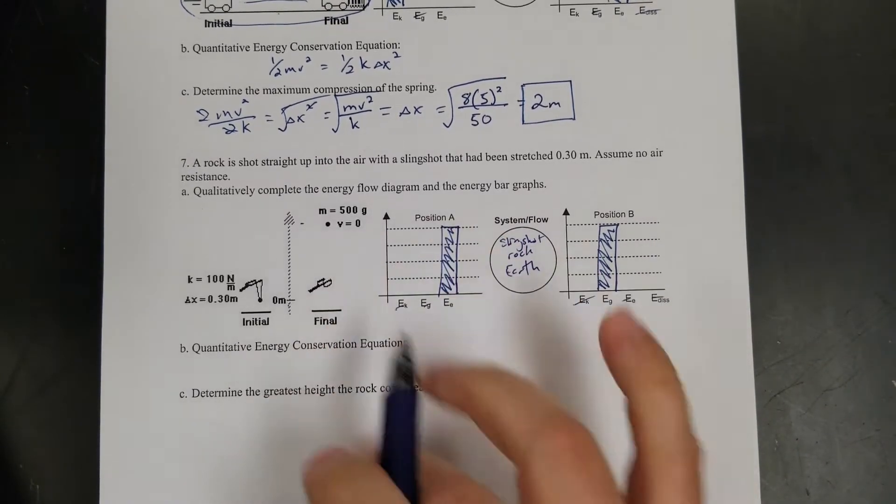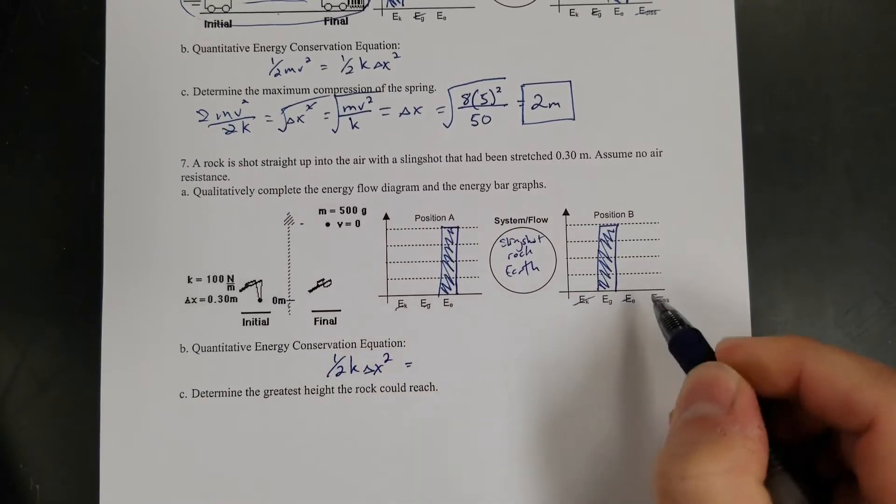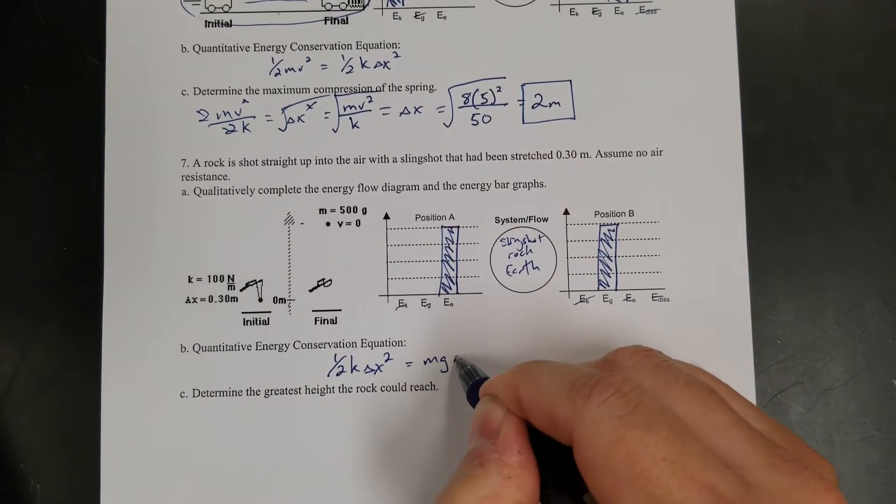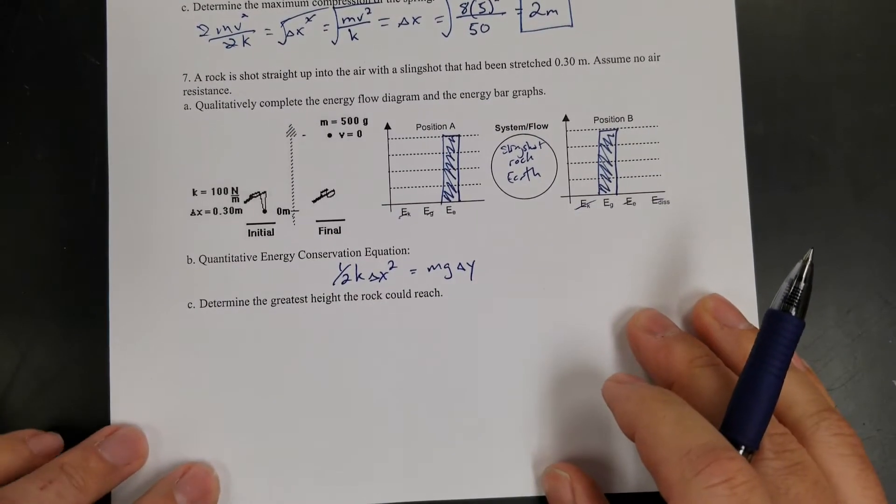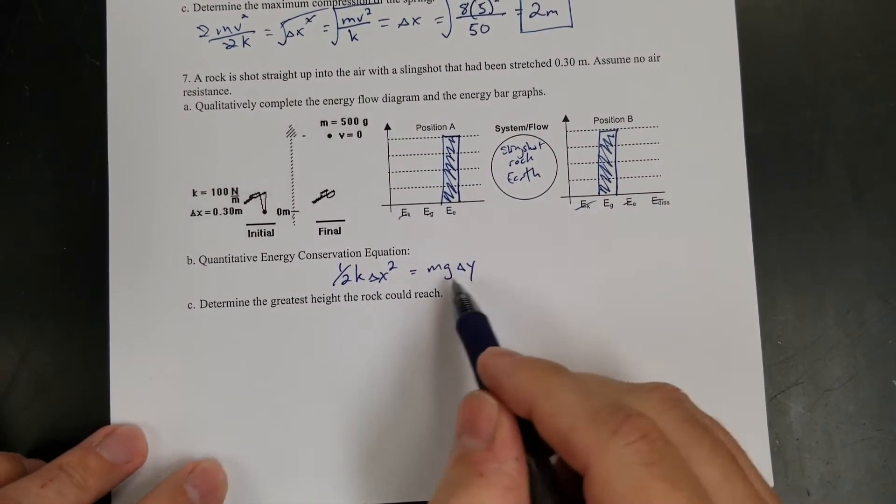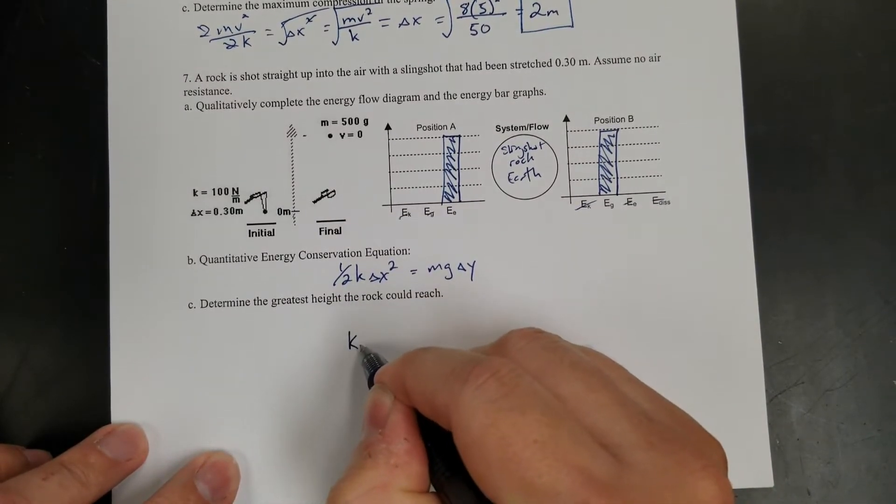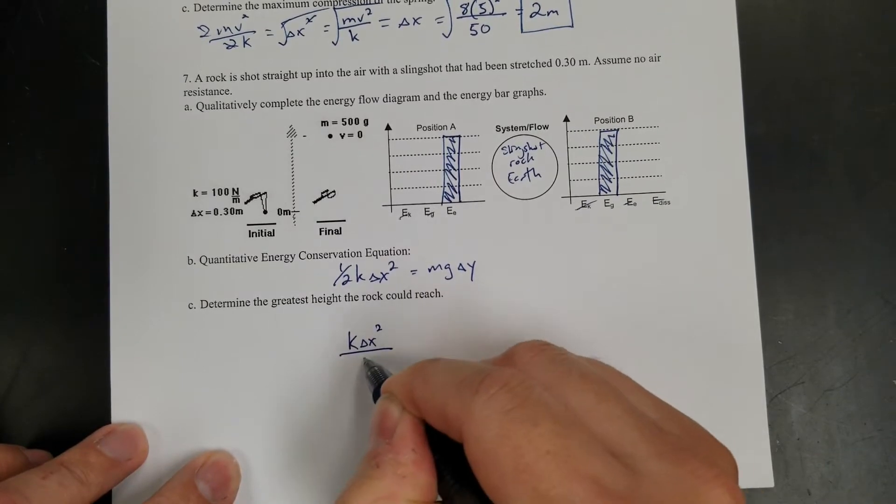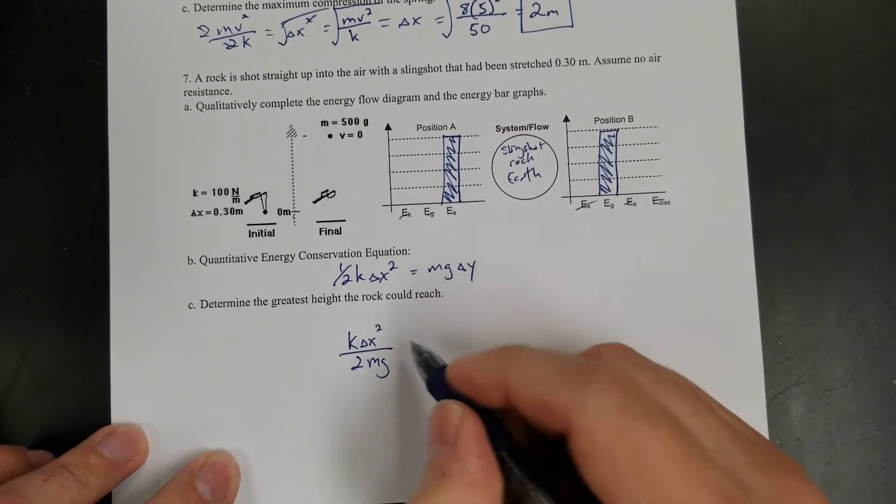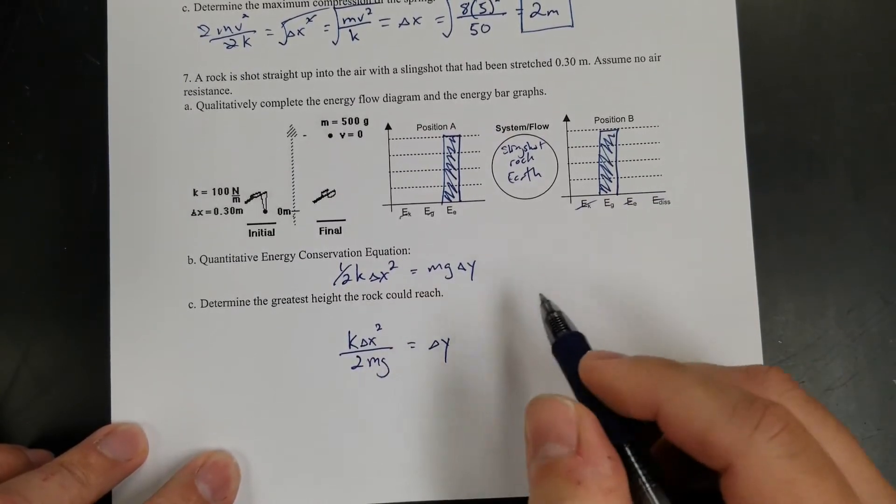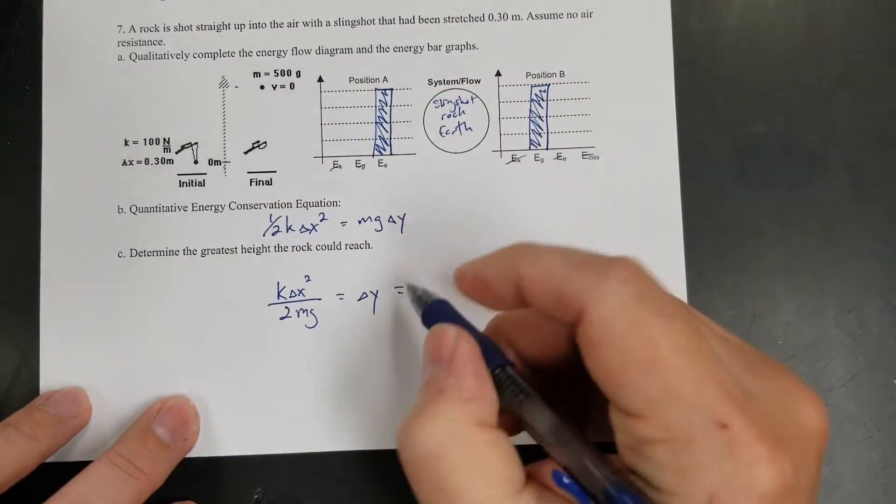So let's write my equation. 1 half kx squared equals mg delta y, right? Because elastic is turning into gravitational. Okay, so determine the highest height the rock could reach. So let's solve for delta y. Well, I just got to divide mg over. So k delta x squared over 2. And then I'm going to divide mg over to get rid of it. That will equal the height.